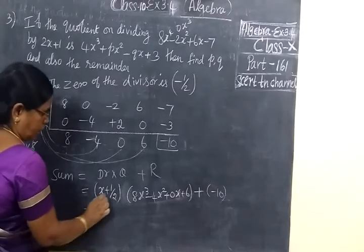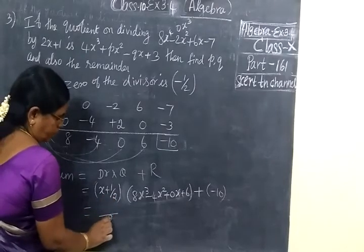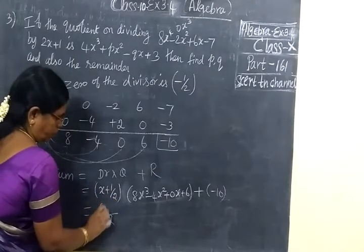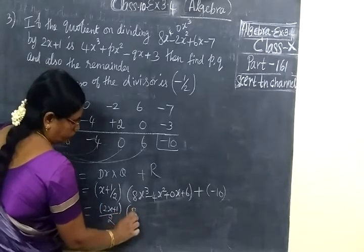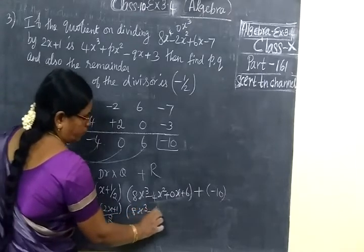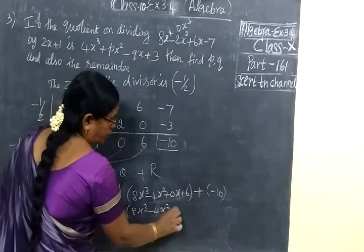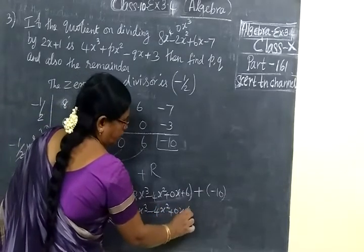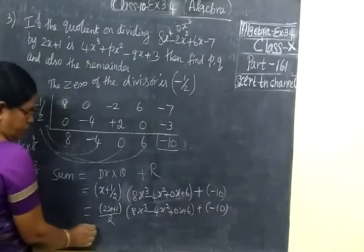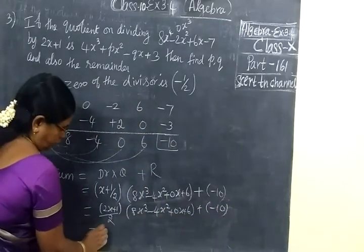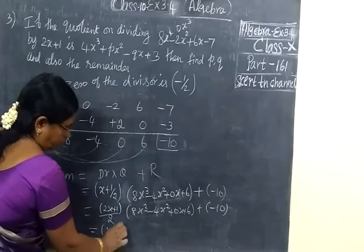Now you take the LCM for this. LCM is 2. So if we cross multiply 2x plus 1, here 8x cube minus 4x squared, then 0x plus 6. Then remainder is minus 10. Take 2 to the denominator, so 2x plus 1.